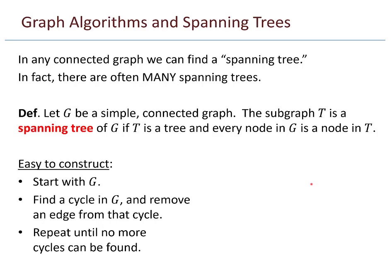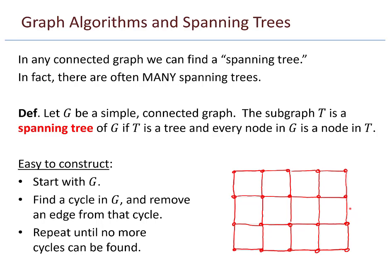Repeat until no more cycles can be found. For example, starting with a graph that has lots of cycles, I just start removing them. I see a cycle of four, remove one of those edges. I remove edges wherever I find cycles — randomly going around. Once I've removed all possible cycles, what remains is a connected graph with no cycles, and that is a tree.